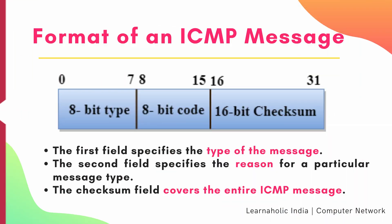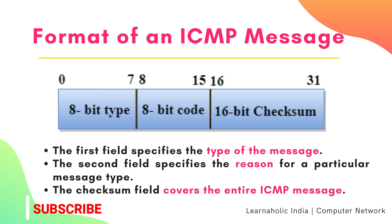Now we will see the format of an ICMP message. The ICMP message consists of 32 bits as shown in the figure. The first field specifies the type of the message. The second field specifies the reason for a particular message type. The checksum field covers the entire ICMP message.